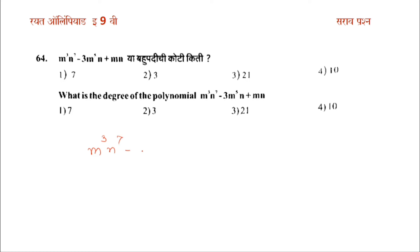mn raised to 7 minus 3m raised to 5 into n plus mn — what is the degree of this polynomial? In this polynomial there are two variables, m and n. I will write the first term: in the first term m and n, the indices are 3 and 7.